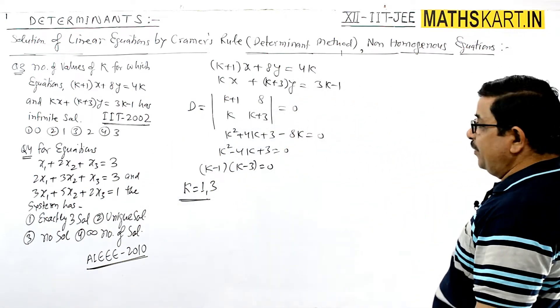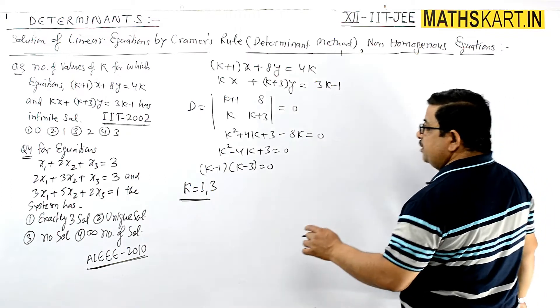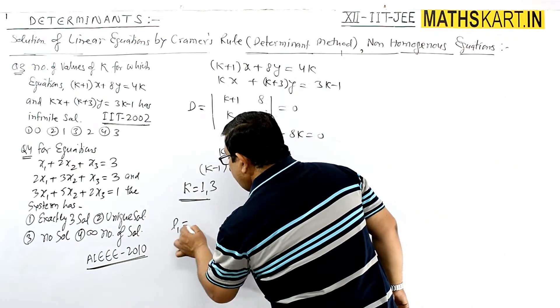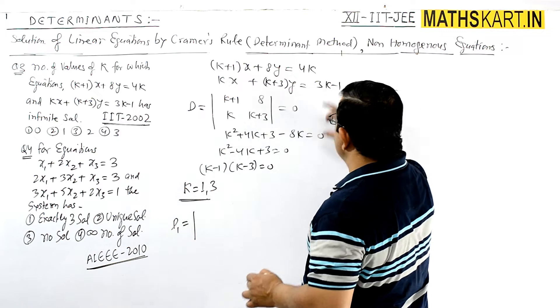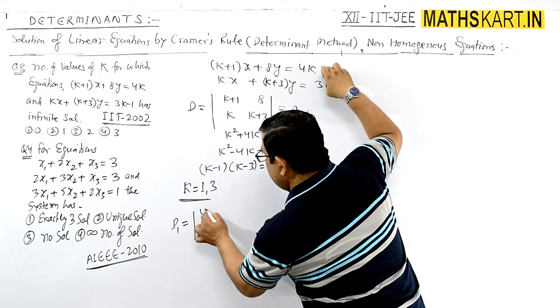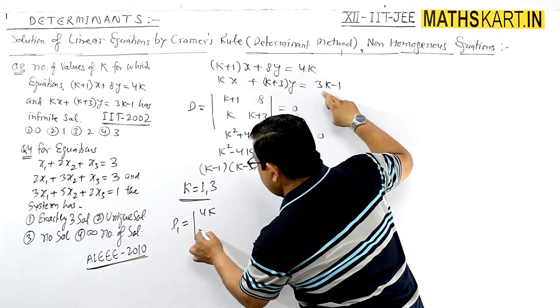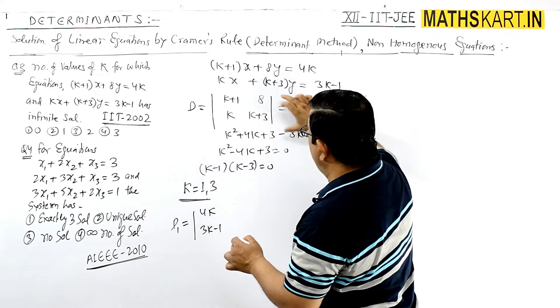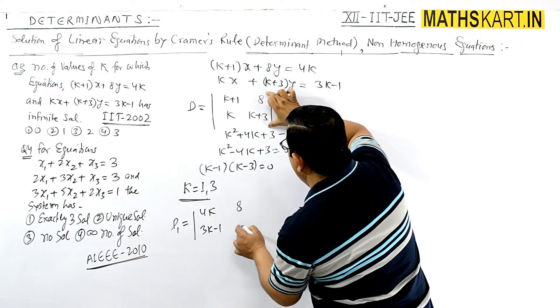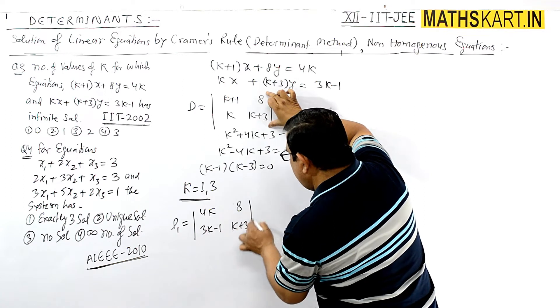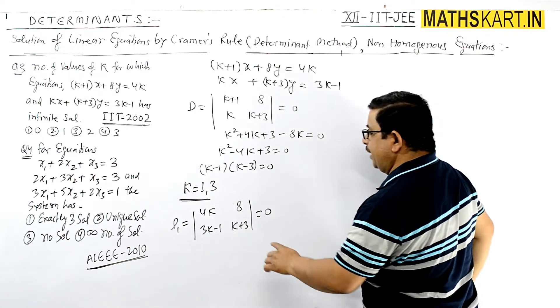For D1, the first column changes to the constant terms: |4k, 8; 3k-1, k+3| = 0. The other columns remain the same. This will also equal zero.